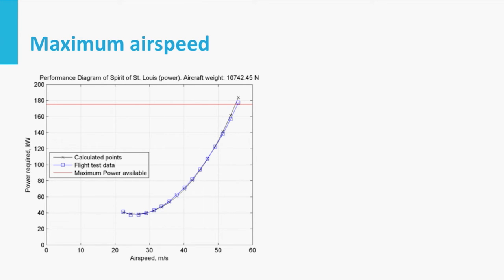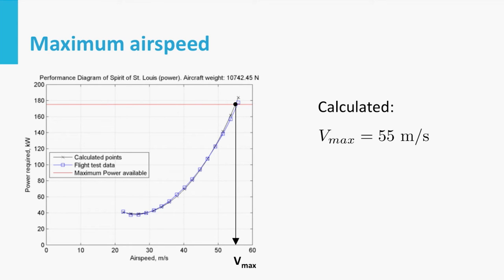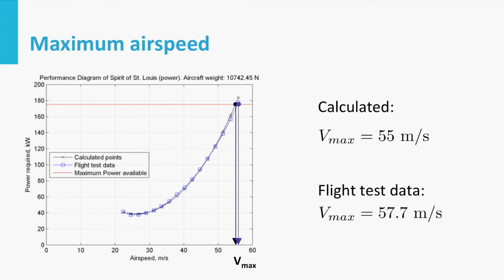In steady horizontal flight, thrust must equal drag, or equivalently, power available must equal power required. The pilot can select any power available up to the maximum power available, and in order to fly as fast as possible one must apply maximum power. So the point where the maximum power available curve intersects with the power required curve indicates the maximum airspeed. In our specific example this equals 55 meters per second, which is quite close to what was demonstrated in flight with the real aircraft: 57.7 meters per second.